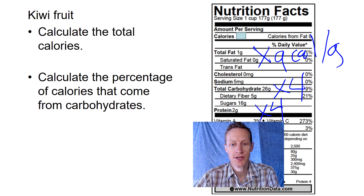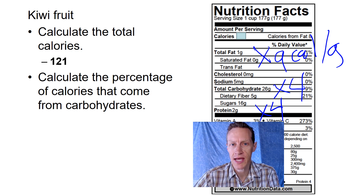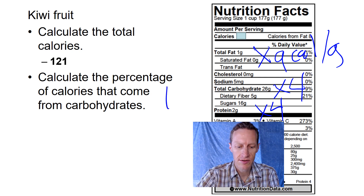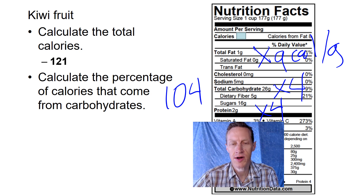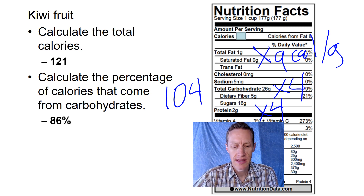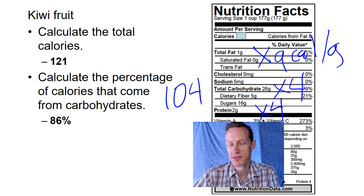And if we do that, we should end up with 121 calories. Then we want to take the 104 calories that we got from carbs and divide them by that total to get the percentage. And that should come out to about 86% with some rounding.